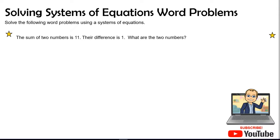So if I'm reading this first problem, it says the sum of two numbers is 11. Their difference is 1. What are the two numbers? Now, there's two things that we need to find out. We need to find out two numbers.